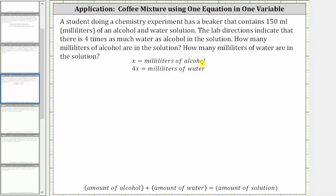We also know the amount of alcohol plus the amount of water must equal the amount of the solution. Since the solution consists of 150 milliliters, our equation is x, the milliliters of alcohol, plus 4x, the milliliters of water, must equal the amount of the solution, which is 150 milliliters.